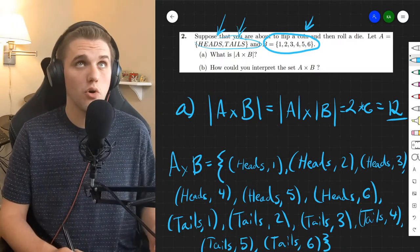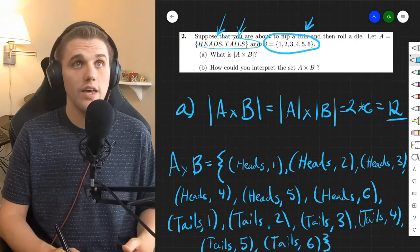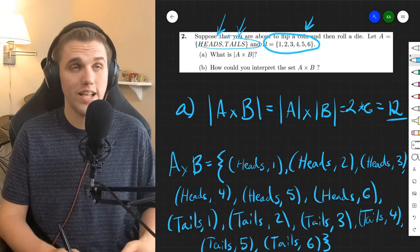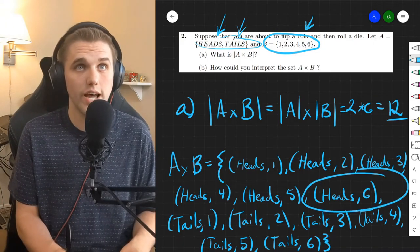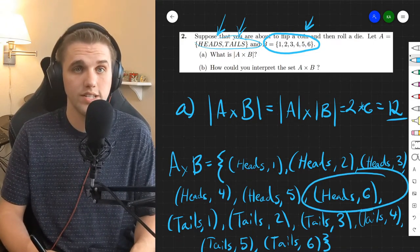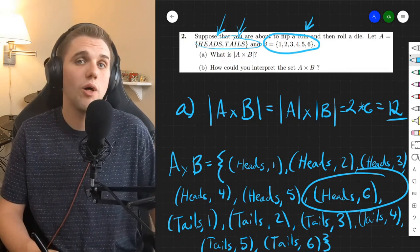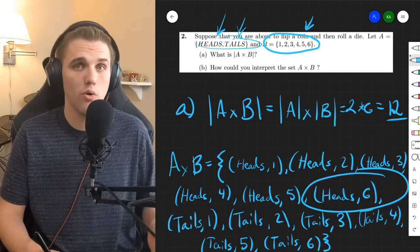Well, if I were to flip a coin and then roll a die, then the outcome of that scenario is going to be one of these elements in this set. So for example, this element here heads in a six is a possible outcome that I can get if I flip a coin and then roll a die.